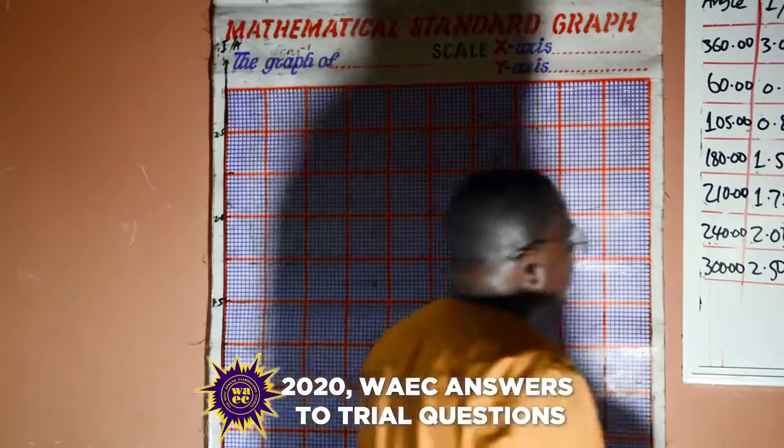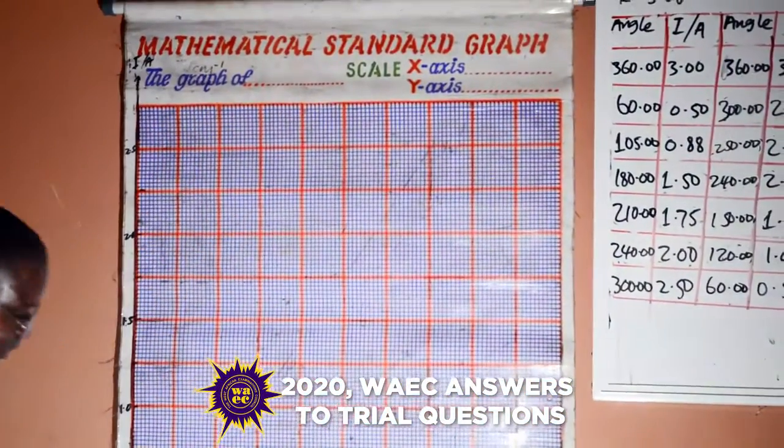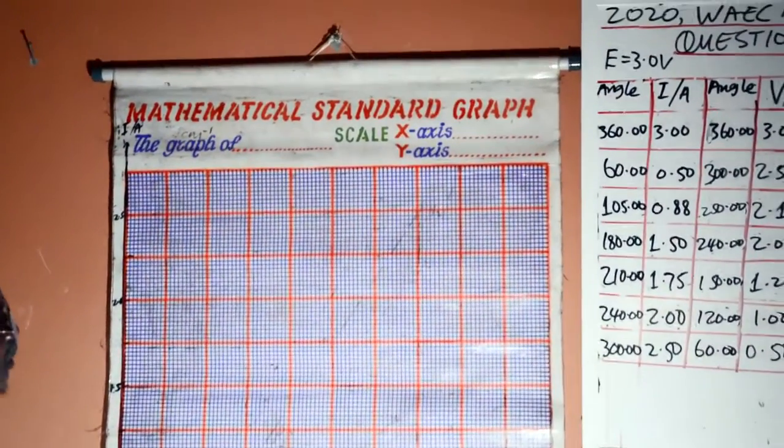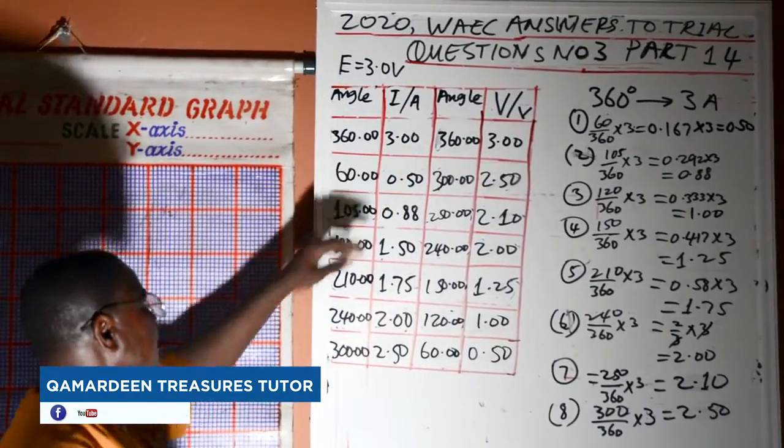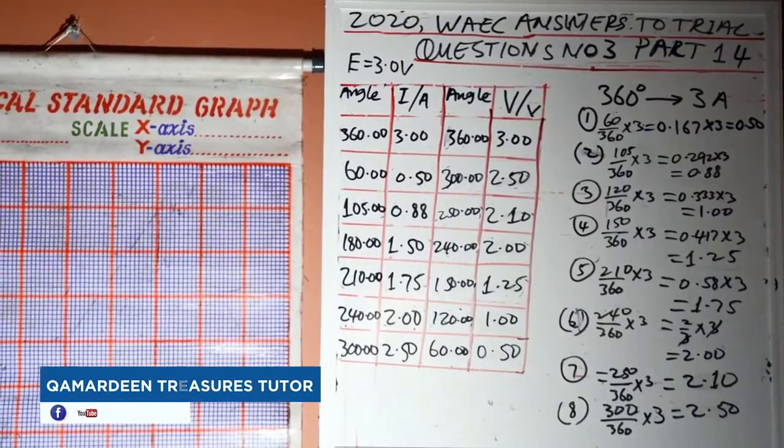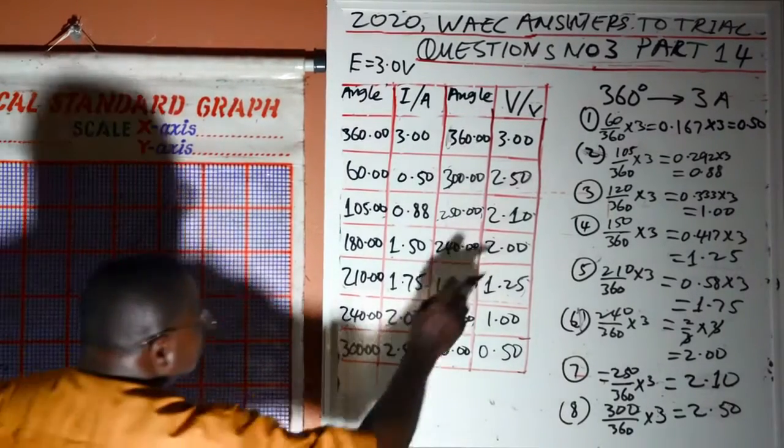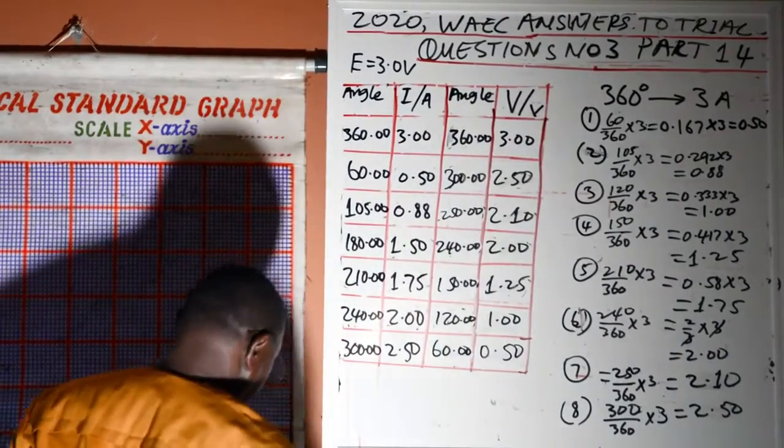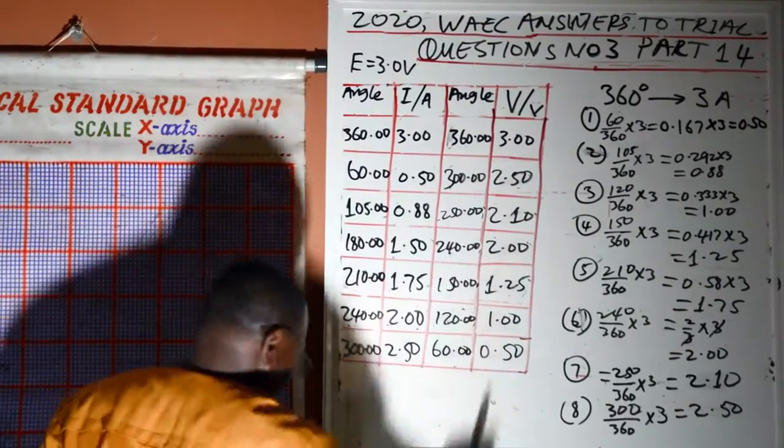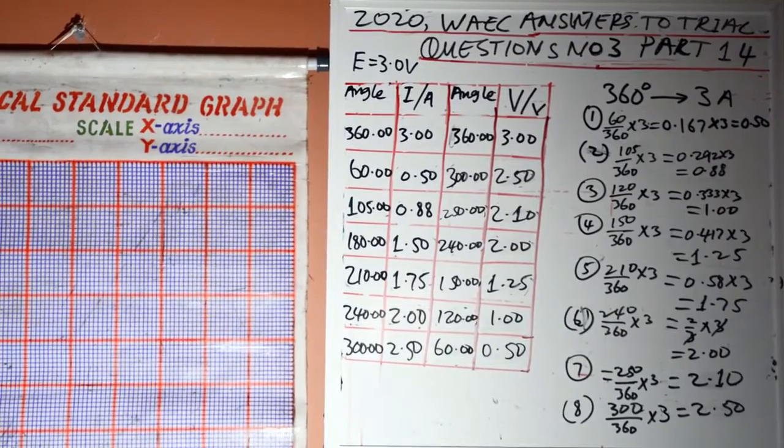Plotting of graph. We are going to plot the current on the vertical axis and the potential difference on the horizontal axis.